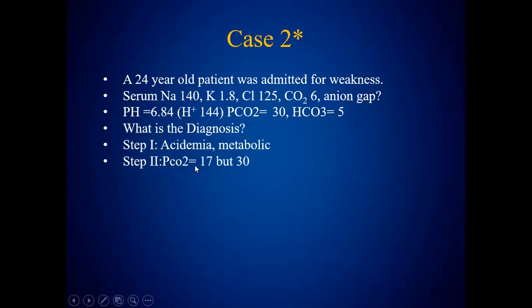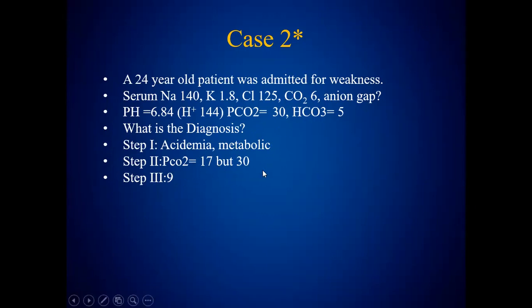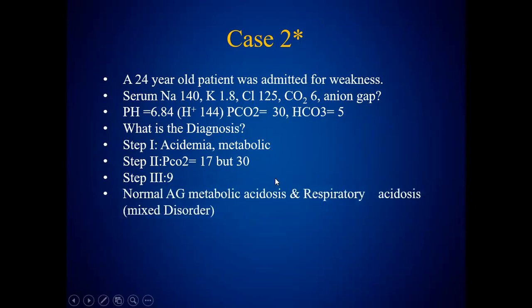Step two, we calculate the compensation. Once we apply the formula, pCO2 should be 17, but the patient has 30. Something has pushed the pCO2 from 17 to 30. Whatever increases pCO2 is a respiratory disorder — respiratory acidosis. We then calculate the anion gap, which is 9, so it's normal. The answer would be: normal anion gap metabolic acidosis plus respiratory acidosis, because pCO2 should be 17 but is actually 30. It's a mixed disorder — two disorders are going on.